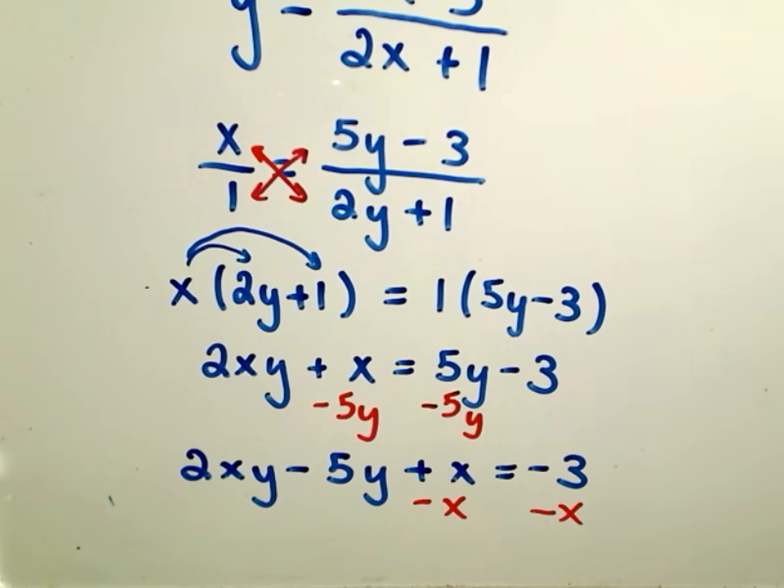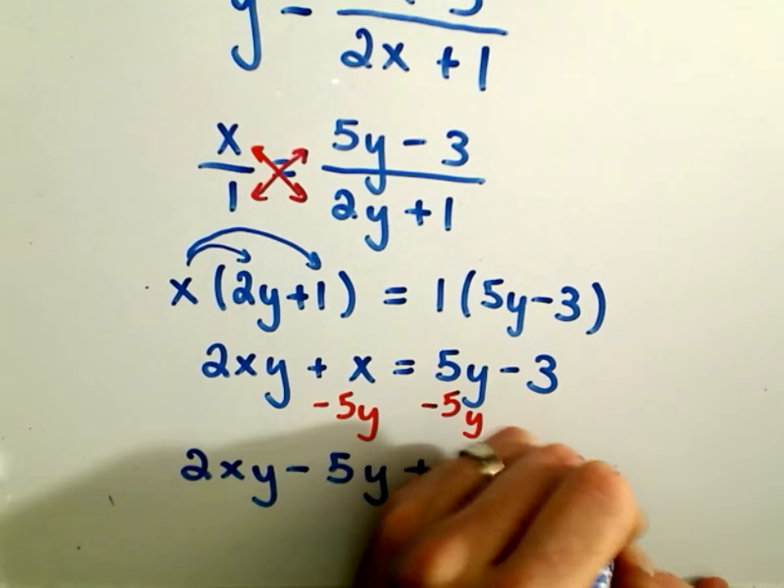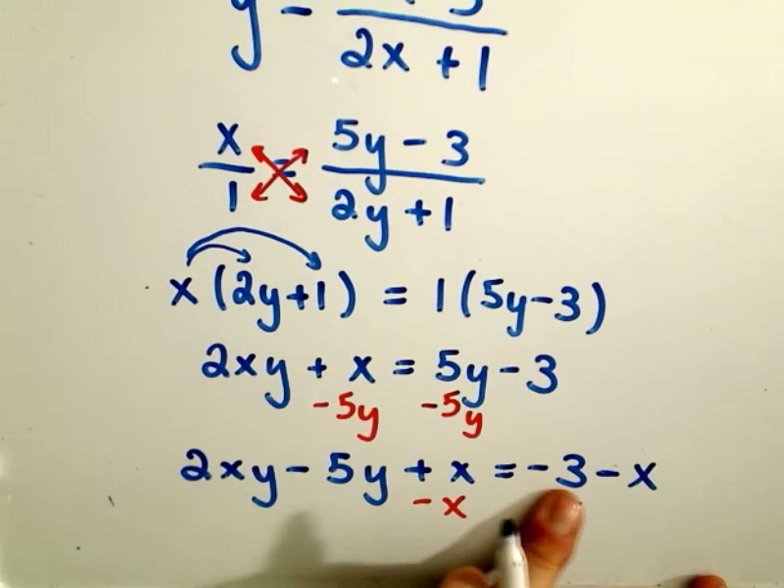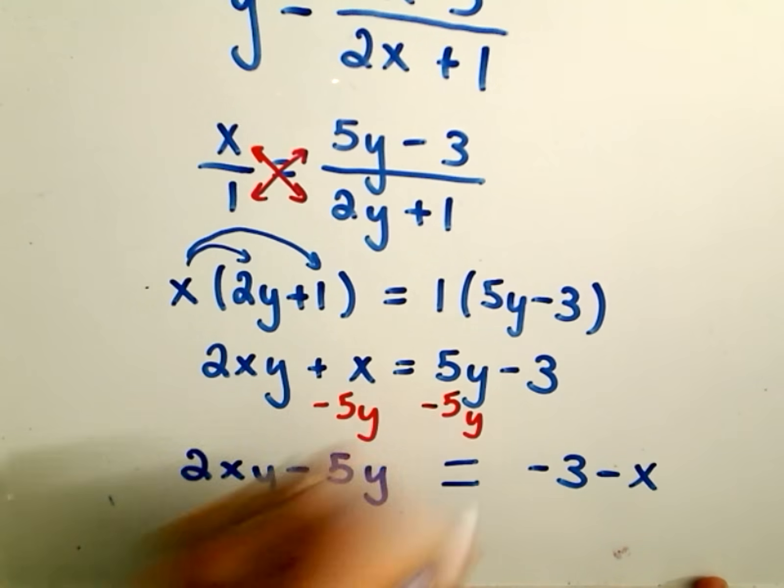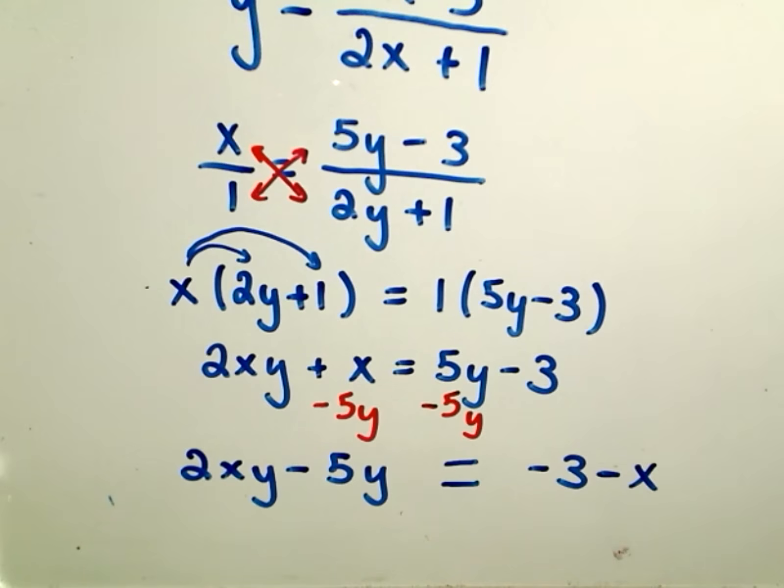So if I subtract it from both sides, it'll just get attached to the right side as a negative x, and then it'll be gone on the left side. So now we have 2xy minus 5y equals negative 3 minus x.